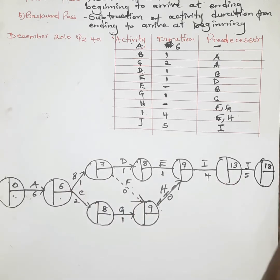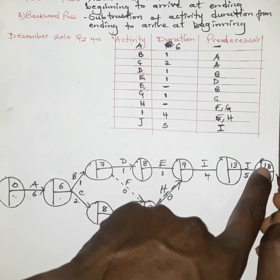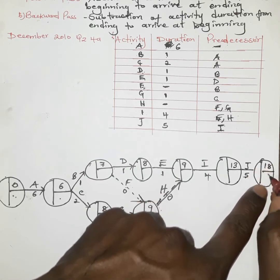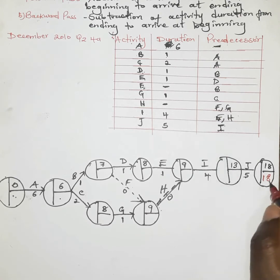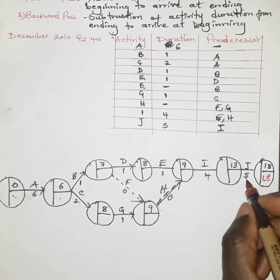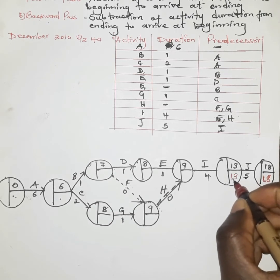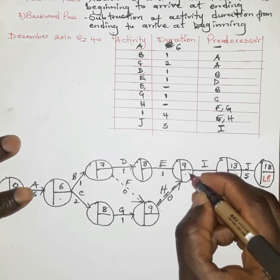That is what is known as the forward pass. Now for the backward pass, we talk about subtraction. The latest completion time, which equals the earliest finishing time, is eighteen weeks. After which we subtract the duration to get thirteen. Then to get the next node, we subtract four from thirteen to get nine.